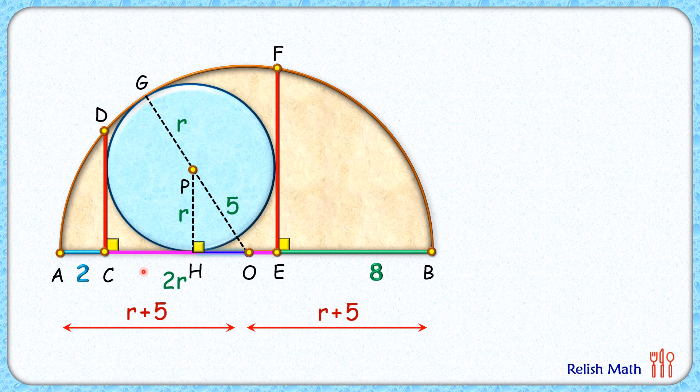Now in this right angle triangle, applying Pythagoras theorem, we can get r as 4 centimeter. And that's our answer. I hope you enjoyed the solution.